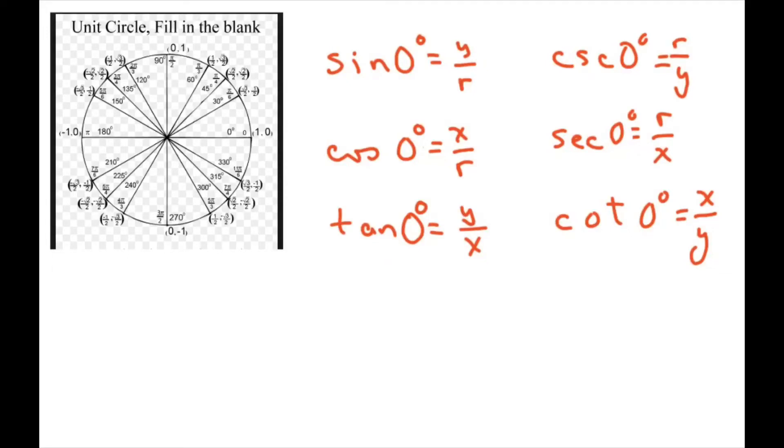Hi everyone. We're going to find the six trigonometric functions for sine, cosine, tangent, cosecant, secant, and cotangent. We're going to do it for quadrantals.